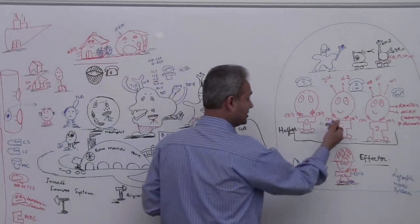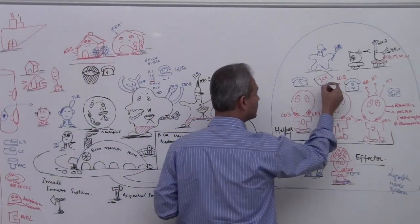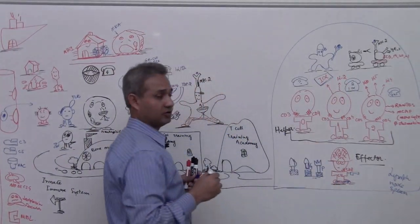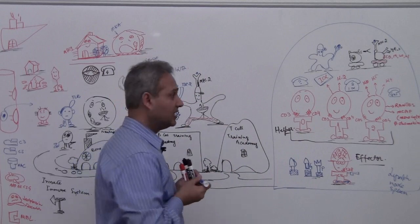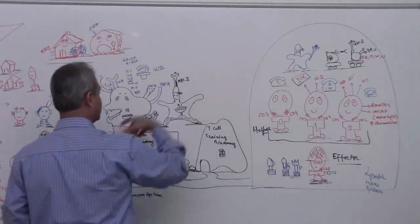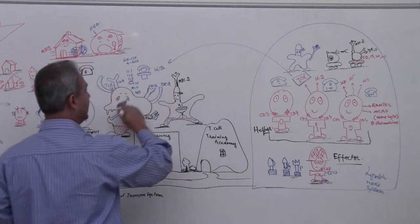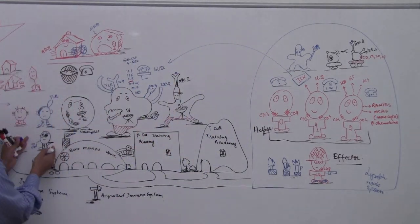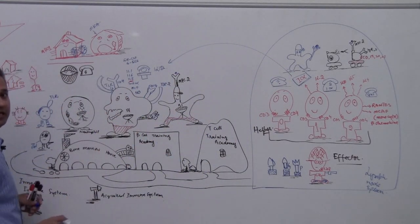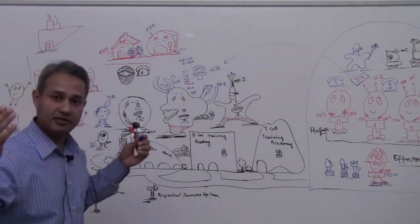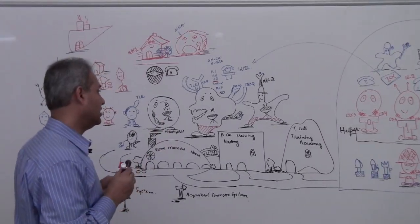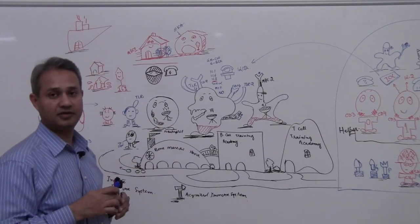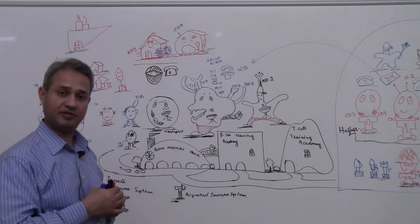Now helper cells, see this interferon gamma? This is a very important chemical substance. Helper cells then through the interferon gamma back which can come and activate natural killer cells. They activate macrophages. They activate other cells of the immune system and so they increase the activity of the immune system.